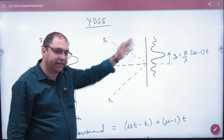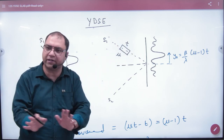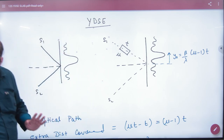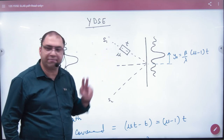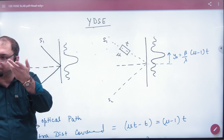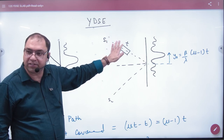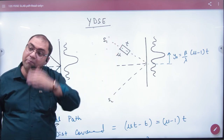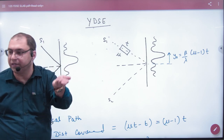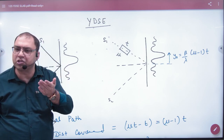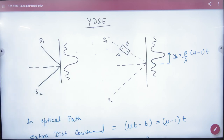Note this formula with the diagram: if the glass slab has thickness T, the pattern will shift by this amount. In the formula booklet, note the formula with the diagram. In competition problems, you calculate the optical path for each wave, then take the difference to find the path difference. Note this formula.